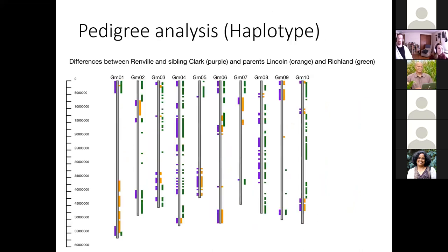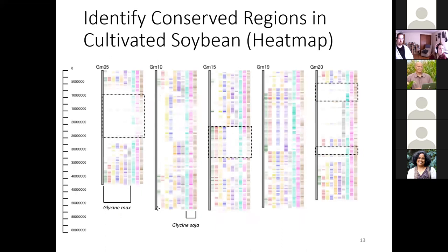On chromosome 11, there are very few differences between the Andean line and the Mesoamerican lines, but quite a few differences between the Andean reference and the other Andean lines. This indicates a probable introgression from the Mesoamerican population on that chromosome.